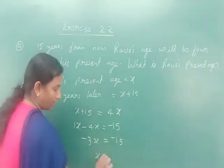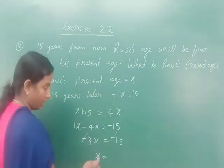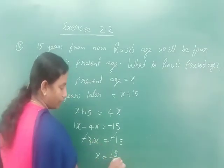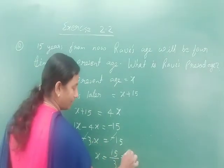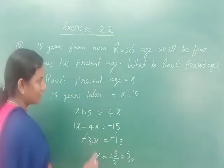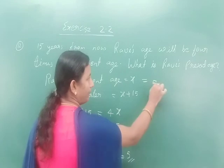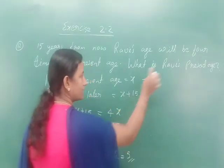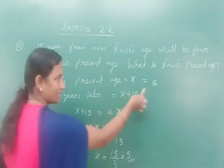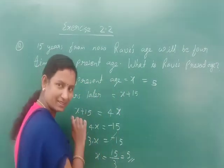The negatives cancel: 3x = 15, so x = 15 ÷ 3 = 5. Ravi's present age is 5 years old.